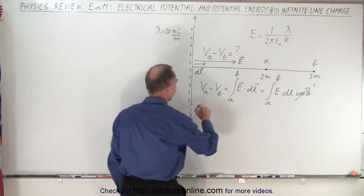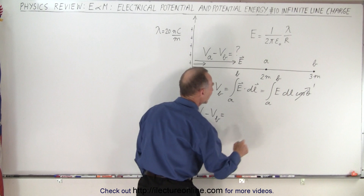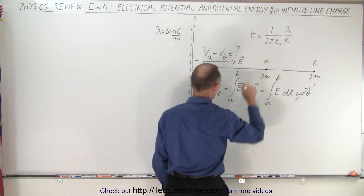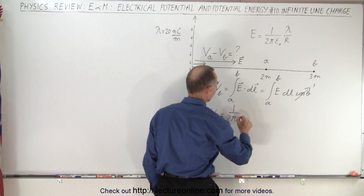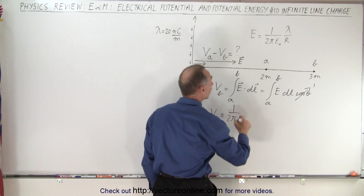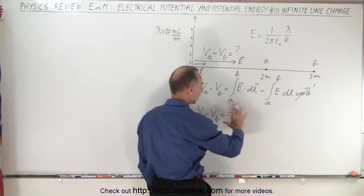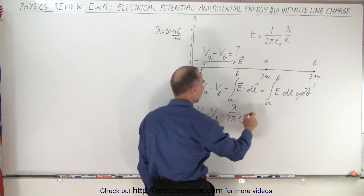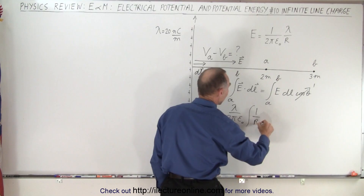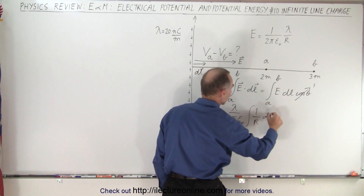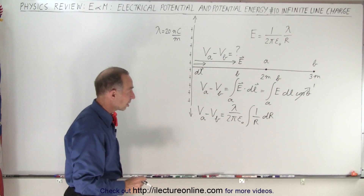We can rewrite this as Va minus Vb equals E, where E is equal to one over two pi epsilon-naught times lambda. These are all constants, and then we integrate what's remaining: one over r. Of course dl becomes dr, which is easier to integrate — that's simply the natural log of r.